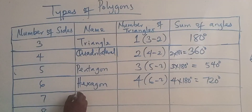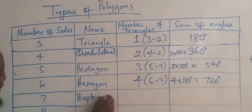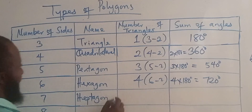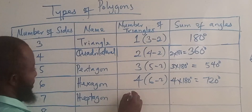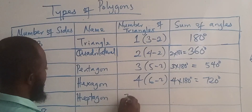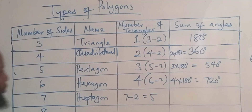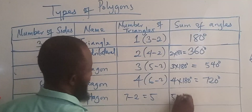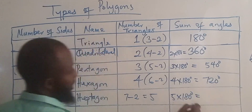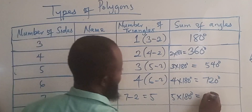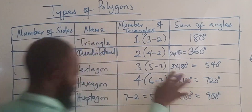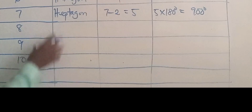Seven sides is called a heptagon. It is going to have how many triangles? Seven minus two gives us five. So five multiplied by 180 degrees gives us 900 degrees, and so on and so forth.